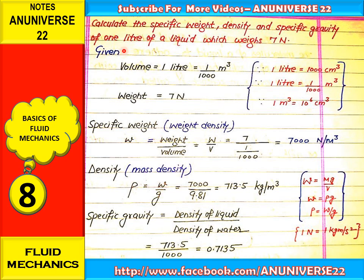Firstly, write down the given variables. Volume is given, that is equal to 1 liter. Convert liter into meter cube. As we know, 1 liter equals 1000 centimeter cube, so it is equal to 1 upon 1000 meter cube. Note that 1 meter cube is also equal to 10 raised to power 6 centimeter cube. So converting, volume becomes 1 upon 1000 meter cube, and weight is equal to 7 N.